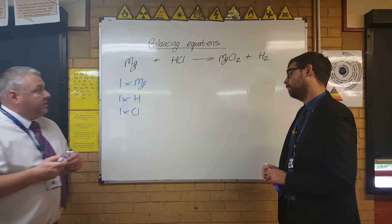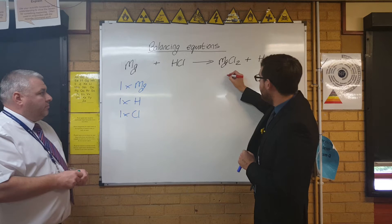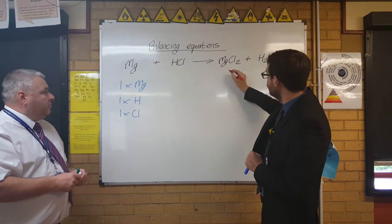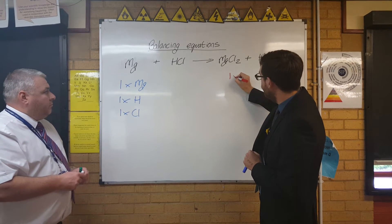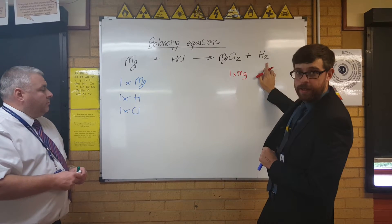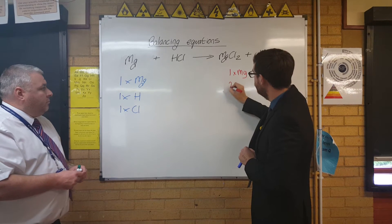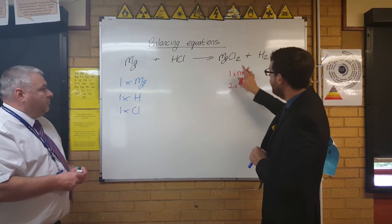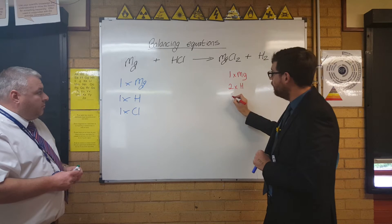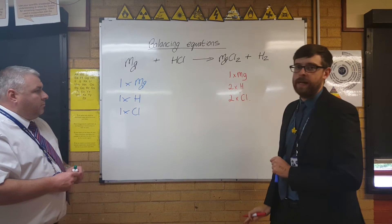And Mr Lycett's going to do the same on the other side. So on this side of the equation, again, no number after magnesium, so there's just one of those. Hydrogen — you can see there's a number two after that, so that means we've got two of those. And chlorine, again a little number two after that, so that means we've got two of those as well.